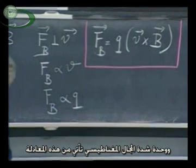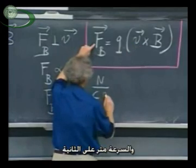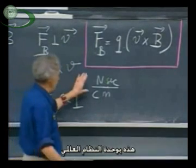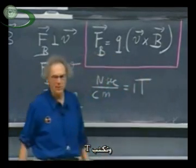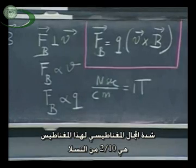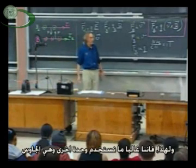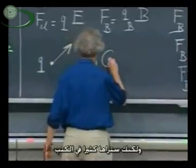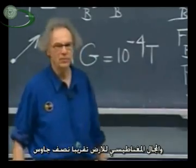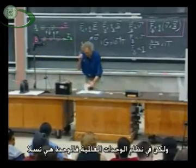The unit for magnetic field strength follows from this equation. The force is in Newtons, Q is in Coulombs, and V is in meters per second. In SI units, we call that one tesla, written as capital T. A tesla is an extremely strong magnetic field — this magnet is only two-tenths of a tesla, and that's already a very strong magnet. We often use the gauss, which is not an SI unit but appears often in books: one gauss is ten to the minus four tesla. The Earth's magnetic field is roughly half a gauss, so this magnet is about two kilogauss. But the SI unit is tesla.